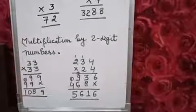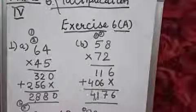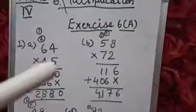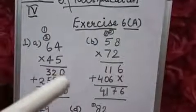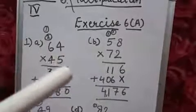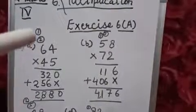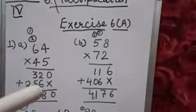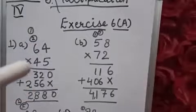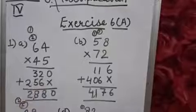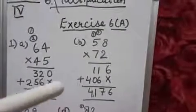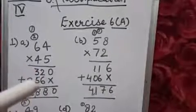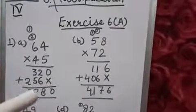Now, let's do exercise 6A. Your first question is 64 into 45. So, 5 4s are 20. 0 we will write here, 2 carry. Now, 5 6s are 30. Plus 2, 32. Now, we will put cross here. And we will start with the next number. Next number is 4. 4 4s are 16. 6 here. 1 carry. 6 4s are 24 plus 1, 25. Now, we will add. So, 0. 2 plus 6, 8. 3 plus 5, 8. And 2. So, your answer is 2880.